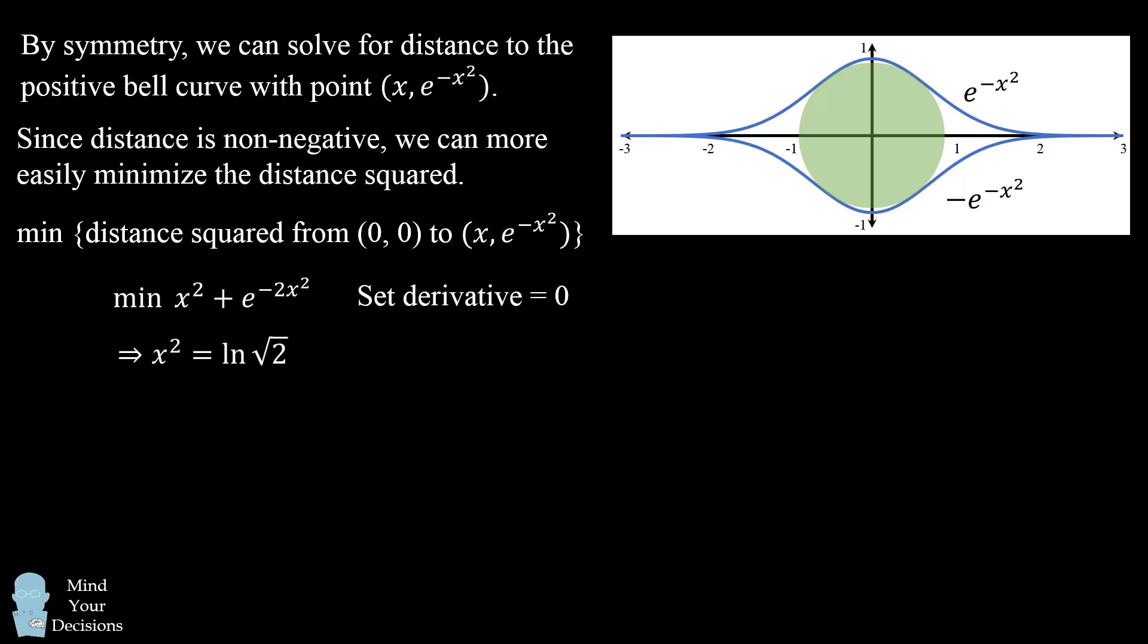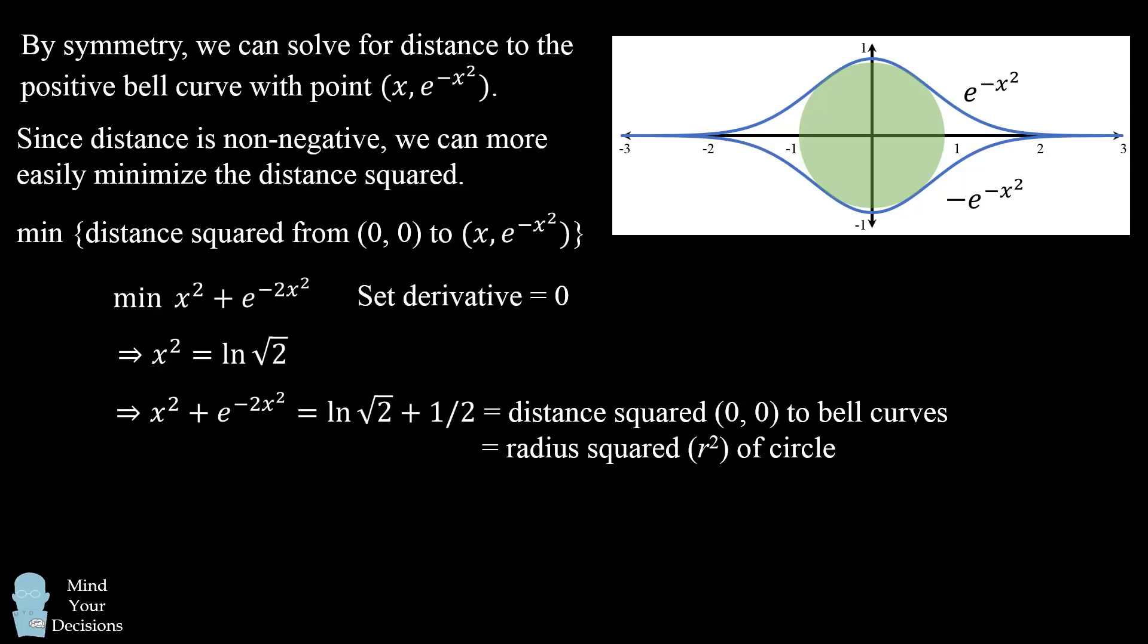So now with this distance squared value, we can then find that the distance squared will be exactly the natural log of the square root of 2 plus 1 half. And notice the distance squared from the origin to the bell curves is also equal to the radius squared r squared of the circle because the distance is equal to the radius. So finally, we want the area of the circle. That'll be pi times r squared, which will equal pi times the distance squared. So we have pi times the quantity natural log of square root of 2 plus 1 half. And that's our answer.